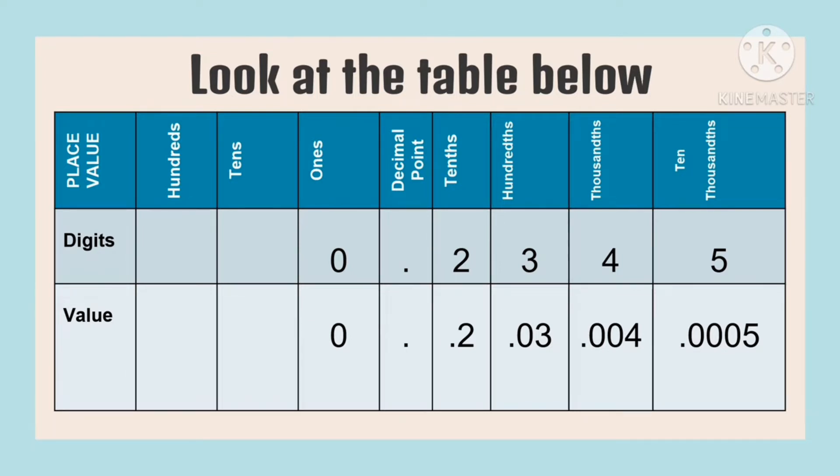Then, what is the value of the digit five? The value of the digit five is ten thousandths. So you'll place three zeros in front of five before you write the digit five.